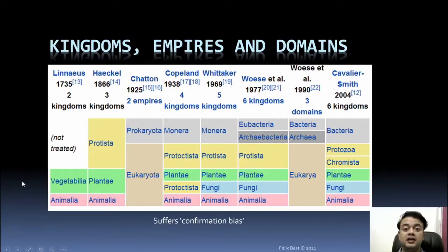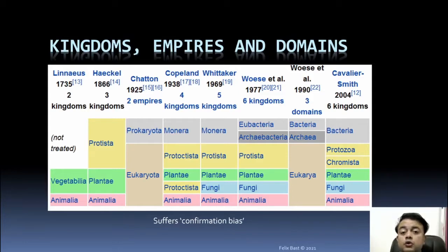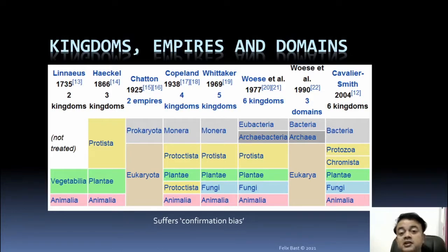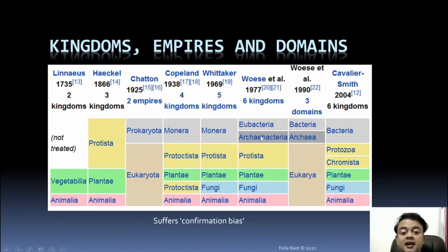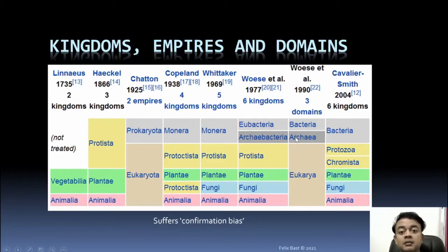Confirmation bias is the tendency to look for evidence that substantiates what we already believe is true. Woese is an archaebacteriologist, and that is why he put Archaebacteria as a top-level domain. Early on he put Archaebacteria as a kingdom; not satisfied, he then elevated Archaea to a full domain — one-third importance of all life.